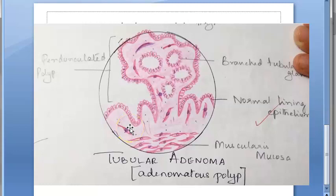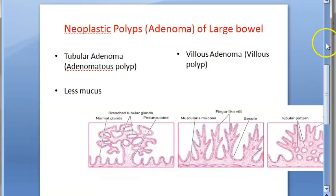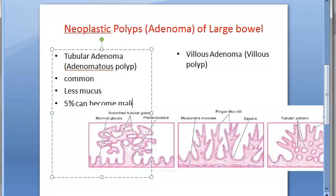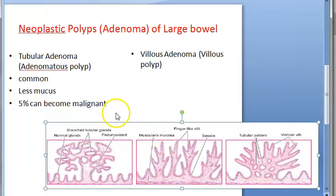Tubular adenoma can present as carcinoma in situ and can later become a carcinoma — it can progress to malignancy. Only 5% of tubular adenomas will become malignant. It is a very common condition with less mucus secretion and only 5% malignant transformation.